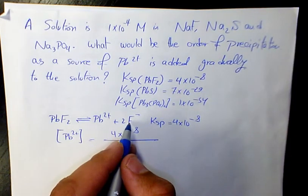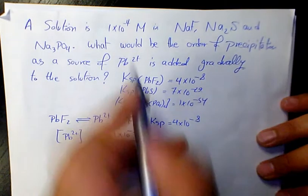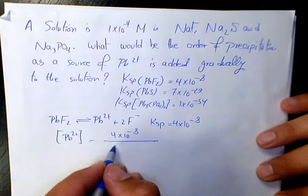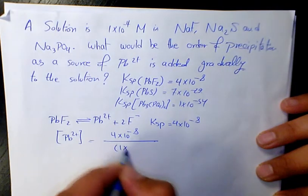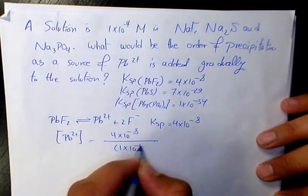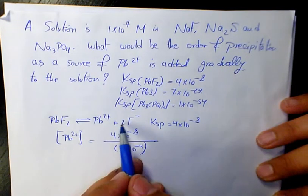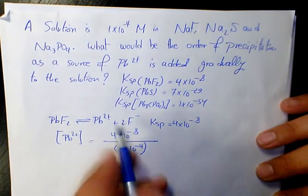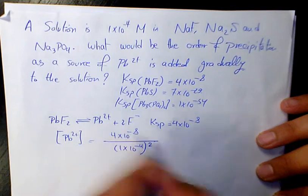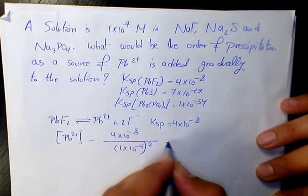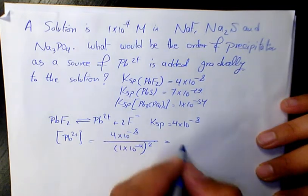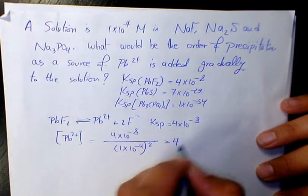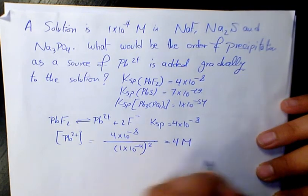The concentration of fluoride, which is 1×10⁻⁴, you need to raise it to the power of 2 because the coefficient here is 2. When you calculate it, you have 4 molar.